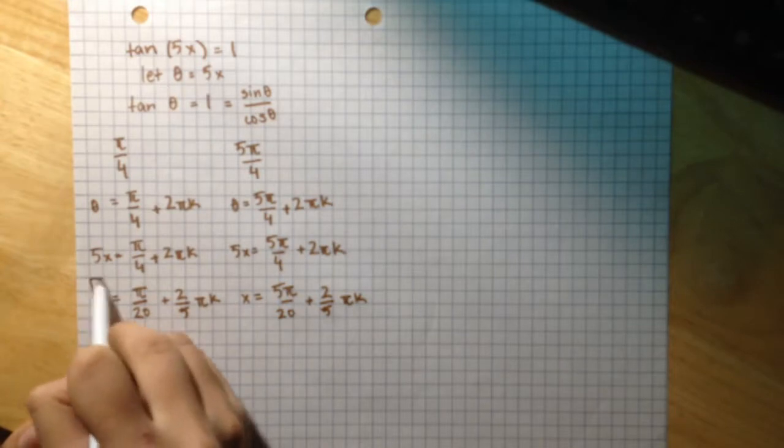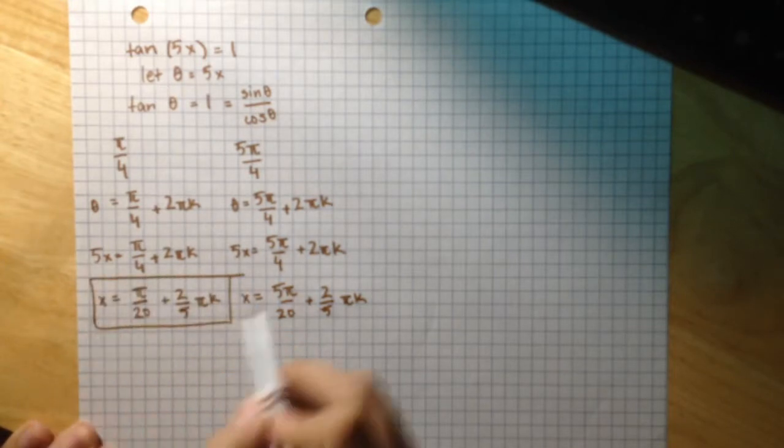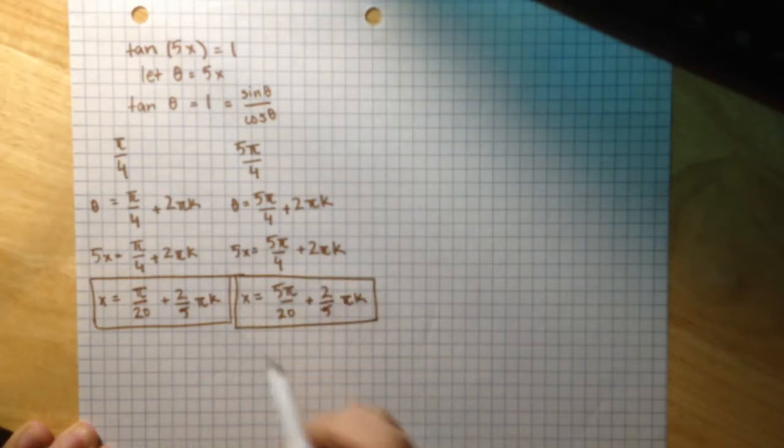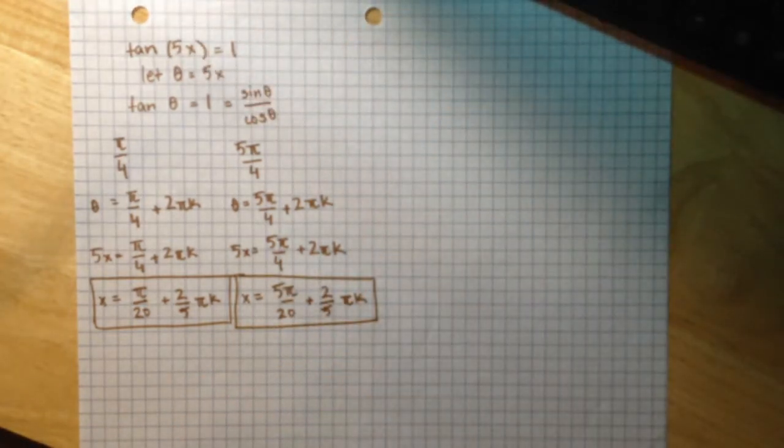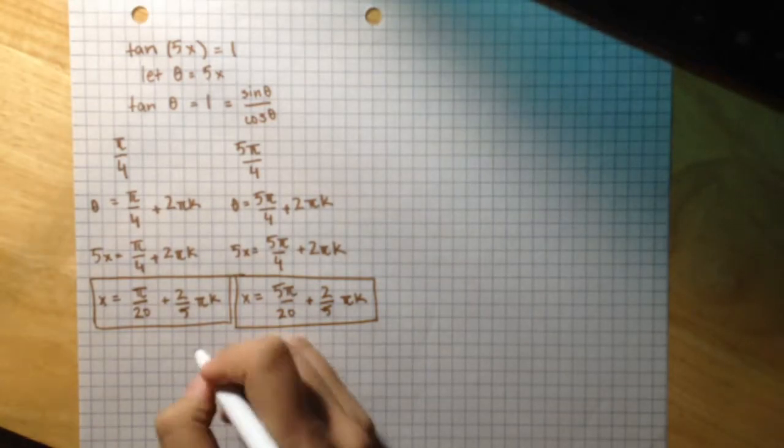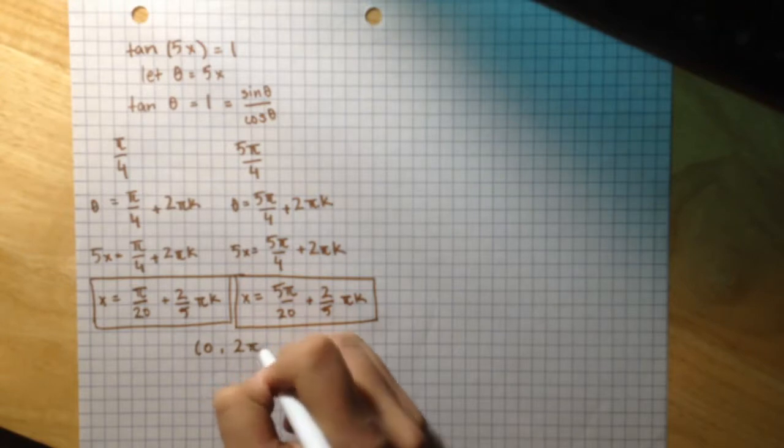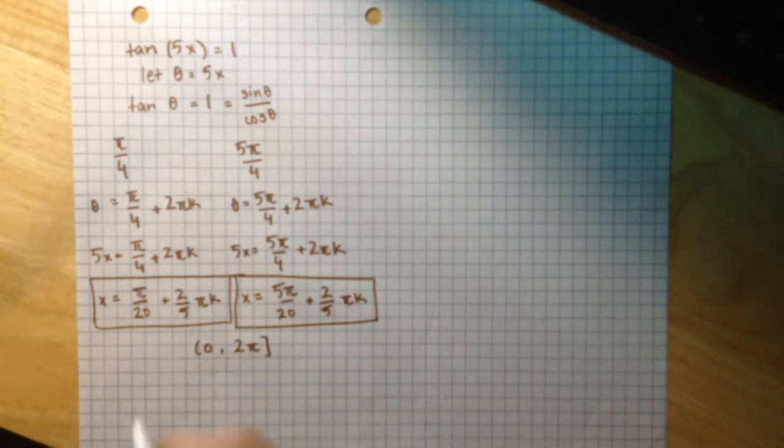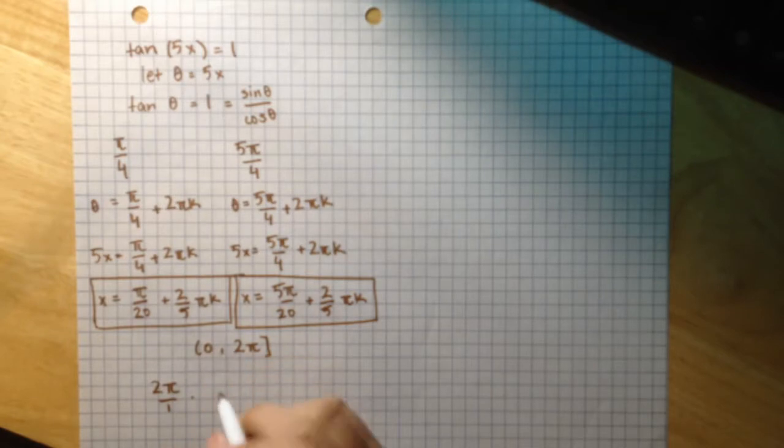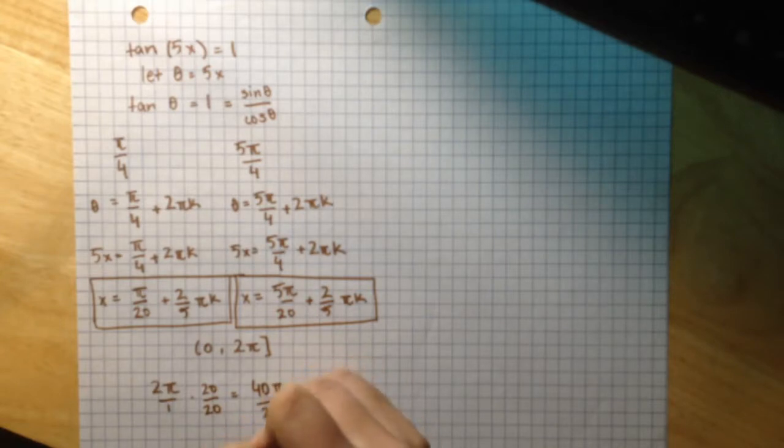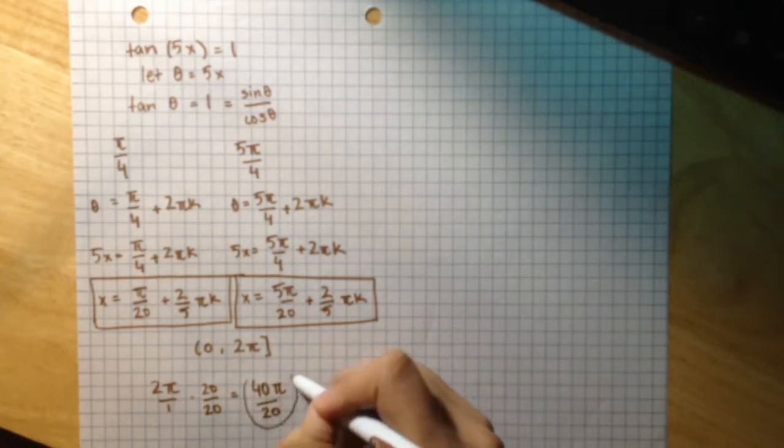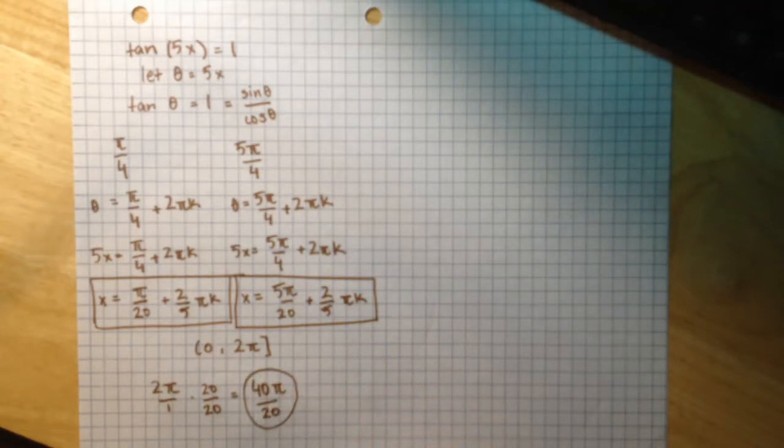These are the two equations for how to represent every single solution out there for this equation. But now we are going to list those solutions which are in the interval 0 to 2pi. I am going to write 2pi with a denominator of 20 just so we can get an idea of when to stop substituting values of k into both equations. I'll multiply the top and bottom by 20 and get 40pi over 20. This is when we start reaching this number and have to stop substituting values into k.